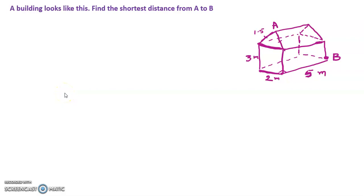A building looks like this. We have to find the shortest distance from A to B — that is, from this point to this point, we have to find this line length. For that, we have to draw an imaginary right-angle triangle, then we can use the Pythagorean theorem. We have to draw the imaginary triangle which includes the length AB.